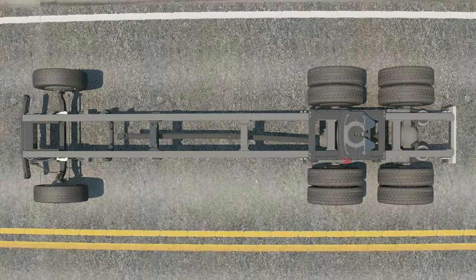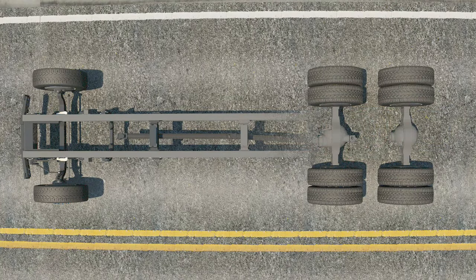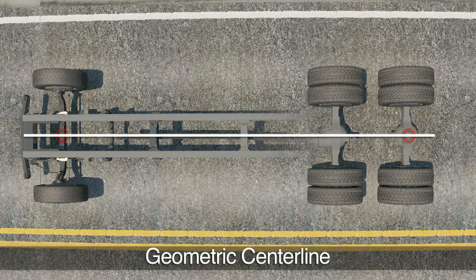To illustrate rear wheel alignment, we'll begin with the geometric centerline. The geometric centerline is an imaginary line drawn through the center point of the rear reference axle and the center point of the front steer axle. Rear thrust conditions will be compared to the geometric centerline.